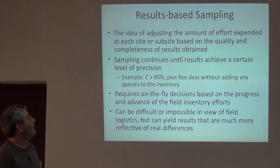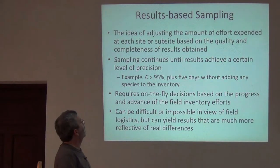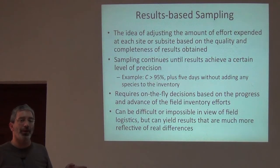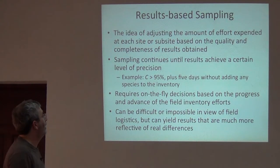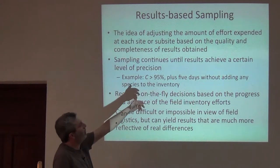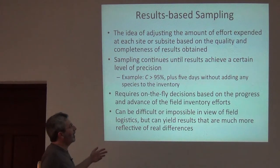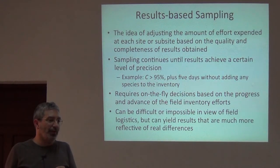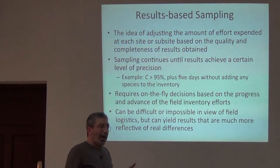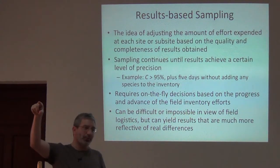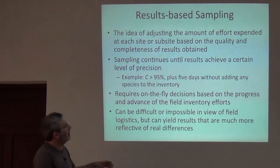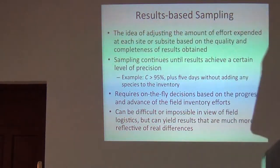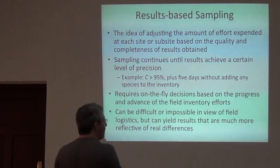So here's the idea of results-based sampling. It's the idea of adjusting the amount of effort expended at a site or subsite depending on the quality and completeness of the results obtained, not depending on some effort criterion. So essentially, you continue your sampling until you achieve some level of completeness. So we could say I want to be 95% done. I want to have detected 95 out of every 100 species in that place. Now you remember that these real-life inventories sometimes have little sills and then they jump up again, so you might add some other criterion to make sure. And so I usually add something like a number of days without adding species to the inventory or something like that.